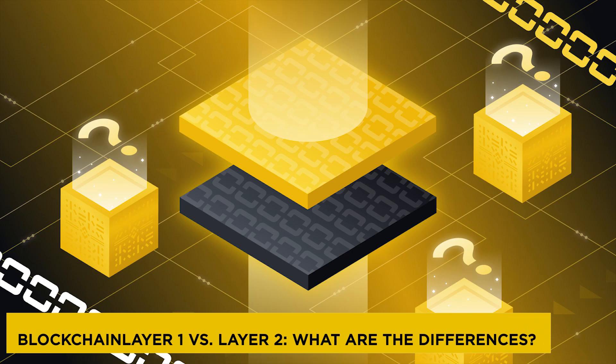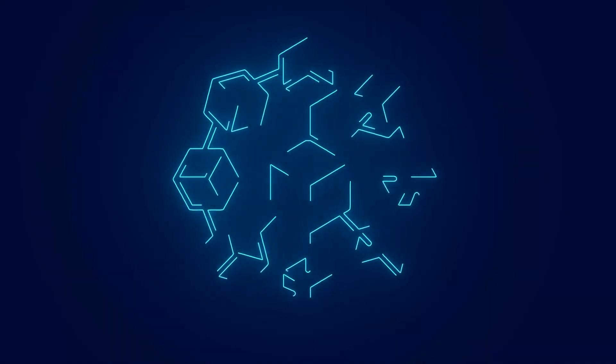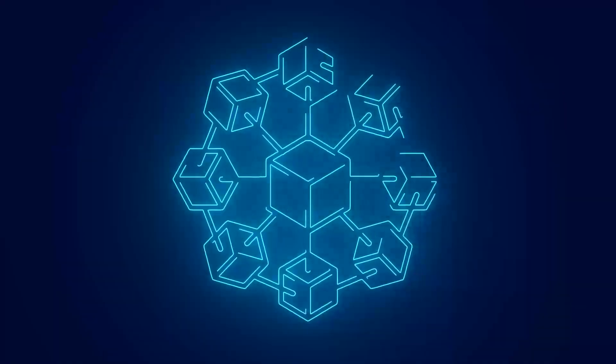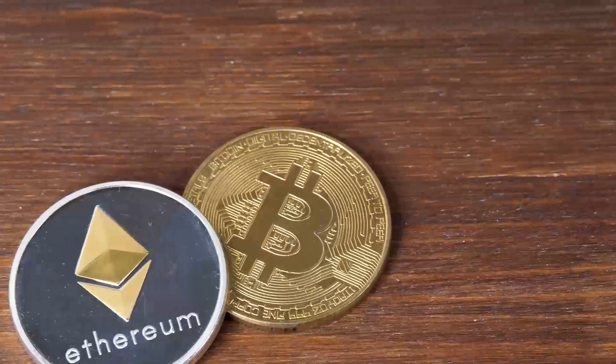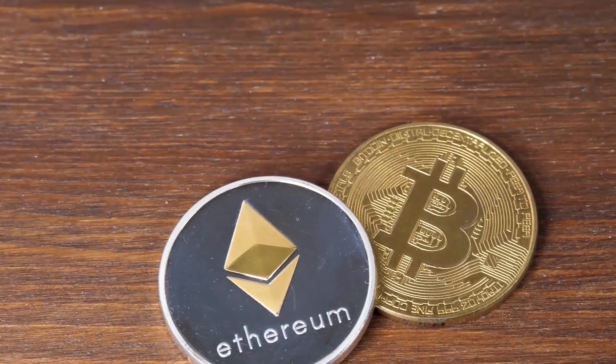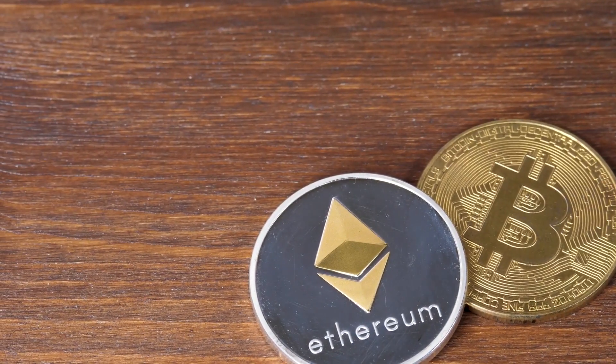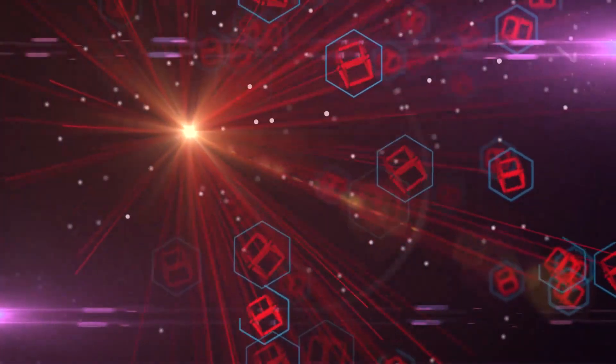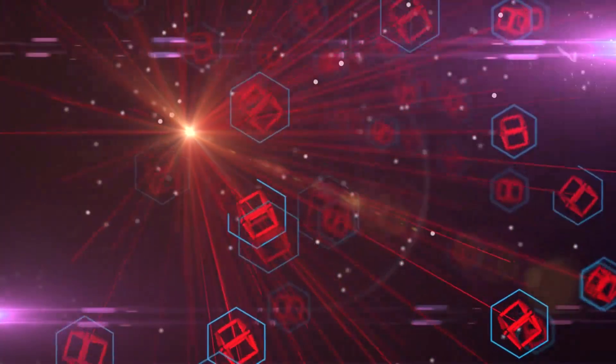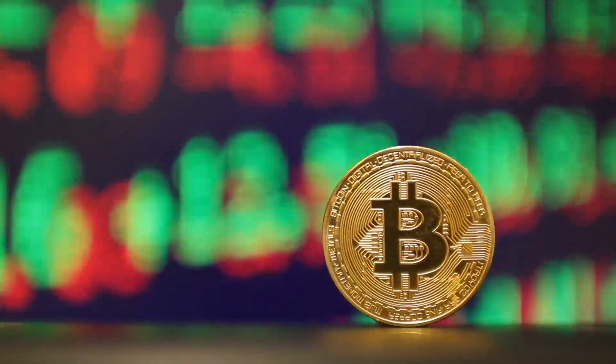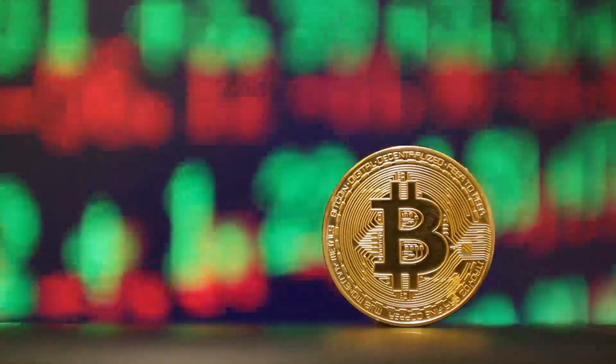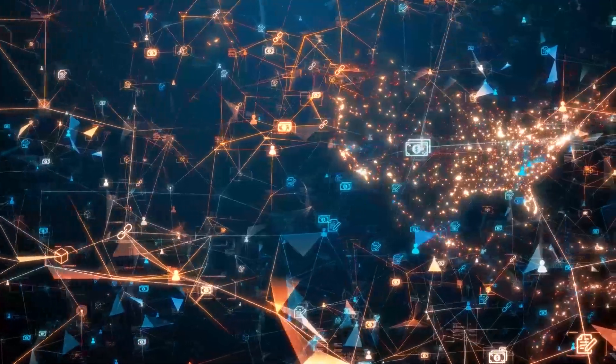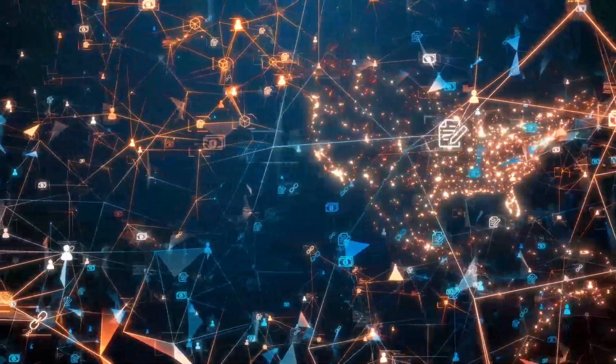Blockchain Layer 1 vs Layer 2. What are the differences? The foundational level of blockchain architecture is referred to as Layer 1. It serves as the foundation of a blockchain network. Blockchains at Layer 1 include Bitcoin, Ethereum, and BNB Chain. Networks constructed on top of other blockchains are referred to as Layer 2.